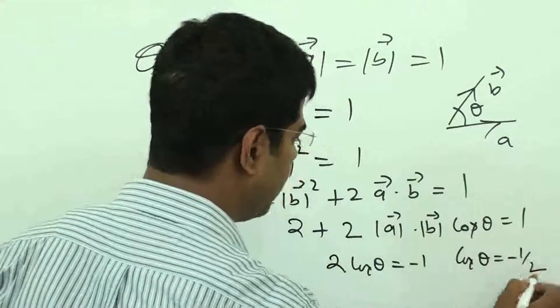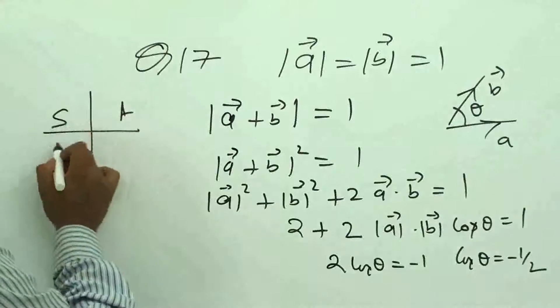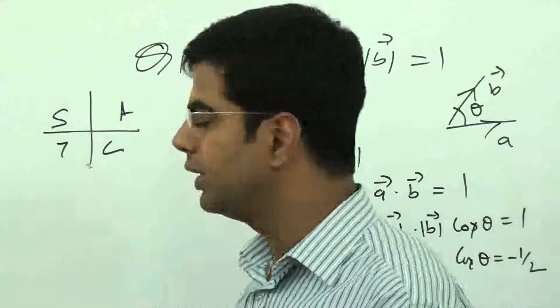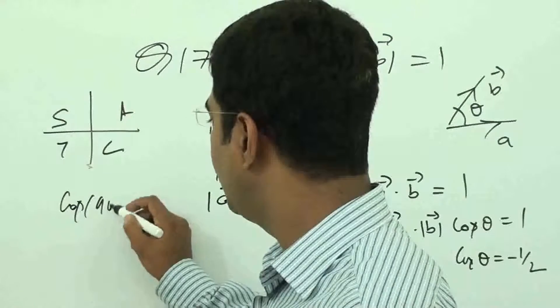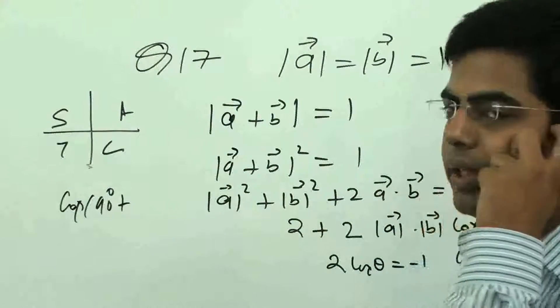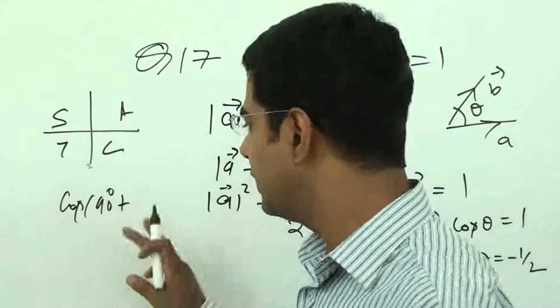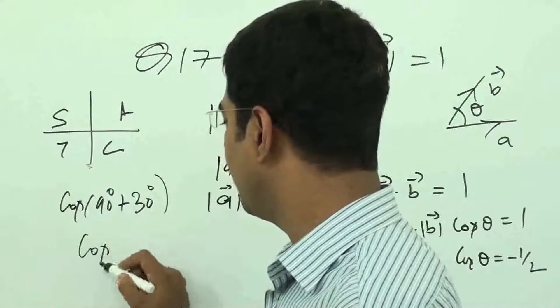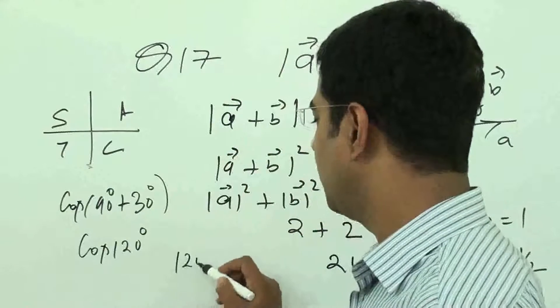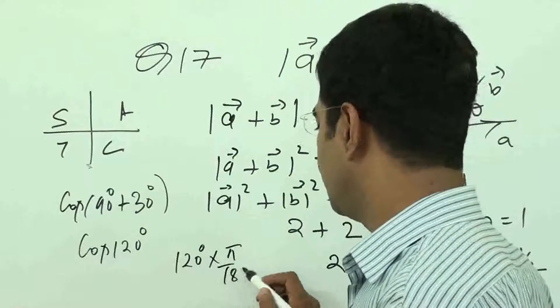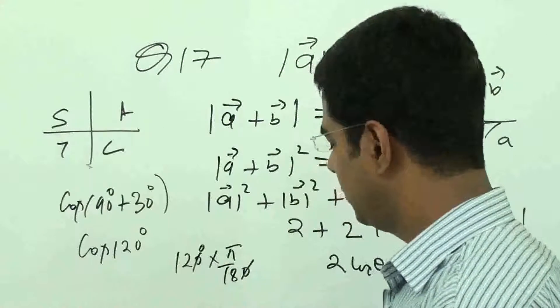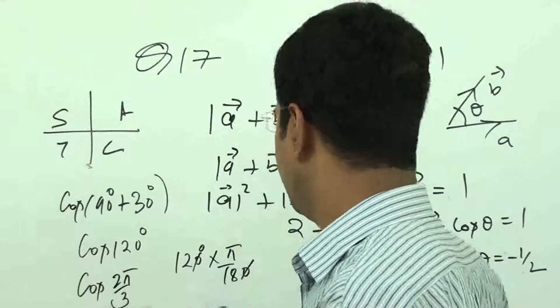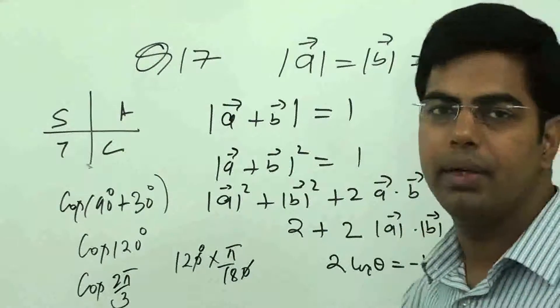Cos theta is equal to minus 1 by 2. Cos of 2 pi by 3. Theta is coming out as 2 pi by 3, this is the answer.